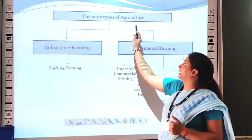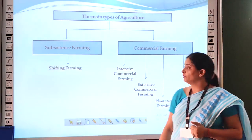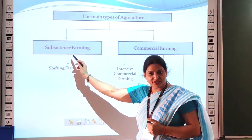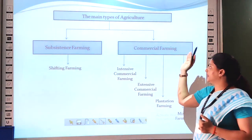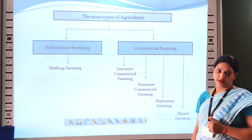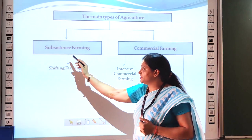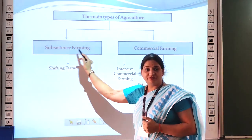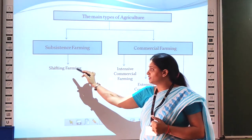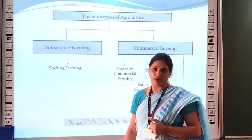There are two main types of agriculture. The first one is subsistence farming and the second one is commercial farming. Subsistence farming covers shifting farming, also known as slash and burn or jhum farming.